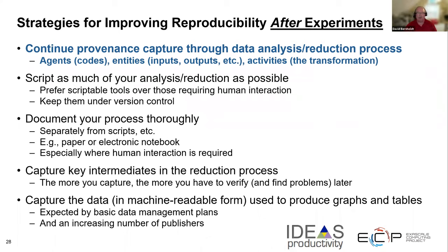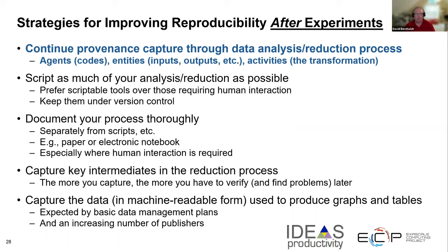After the experiments are done and you're continuing with analysis and reduction, continue making sure you're capturing all provenance information. Script as much of your analysis or reduction as possible — if you're using a GUI-based tool that requires human interaction, it's much harder to reproduce from one time to the next. Continue documenting your processes thoroughly through multiple mechanisms, capture intermediates if you can afford to, and when producing graphs and tables for your paper, make sure to capture the data behind them in a simple machine-readable form to satisfy your data management plans. An increasing number of publishers are also expecting this so people don't have to digitize your graphs.